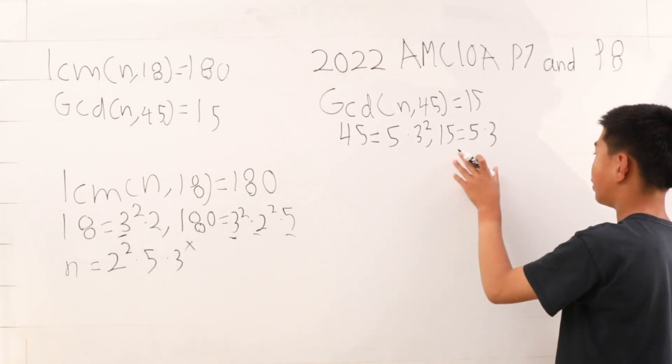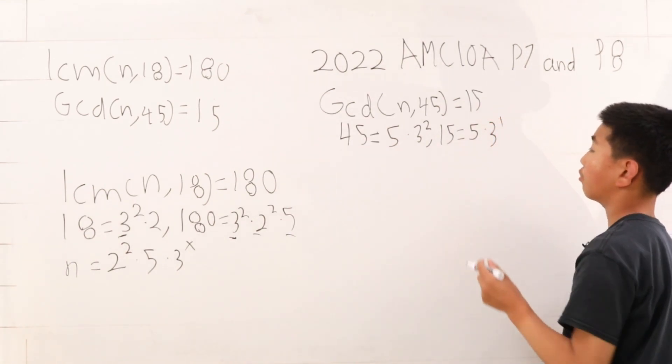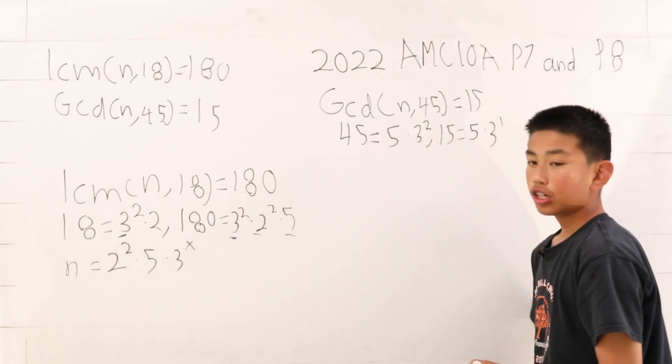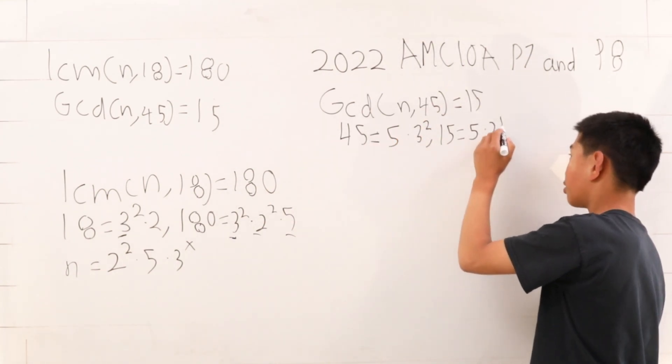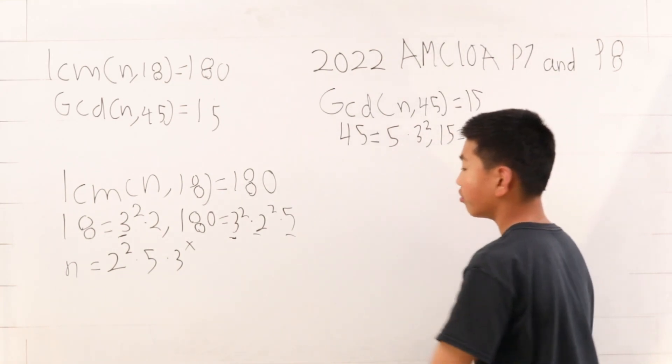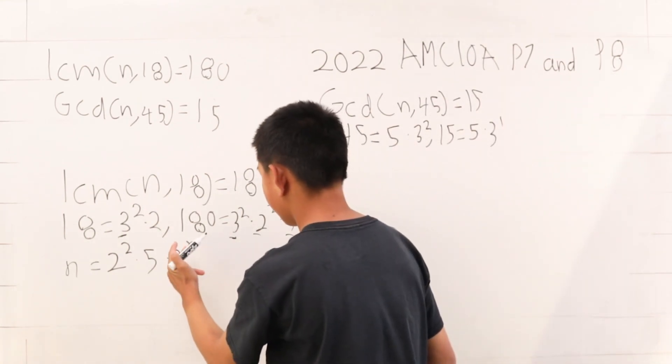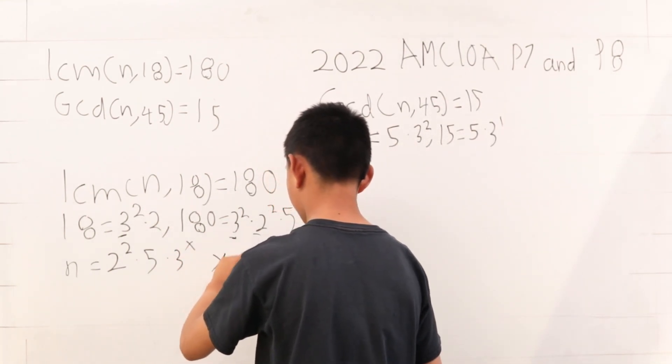We see that in 15 it's 5 times 3 to the 1st power, and in 45 it's 5 times 3 squared. The 3 to the 1st power has to come from n because 45 is 3 squared, not 3 to the power 1. So therefore, x is equal to 1.